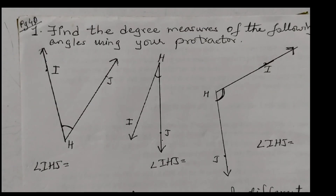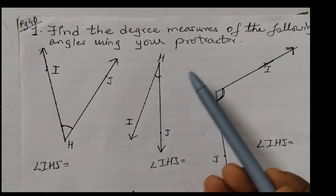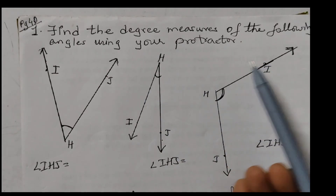Hello students, welcome back to Rosie Math class. In this video we are going to solve the questions of 'Figure It Out' given on page number 40, chapter number two: Lines and Angles. First question is: find the degree measures of the following angles using a protractor.